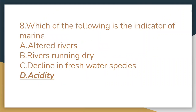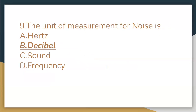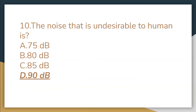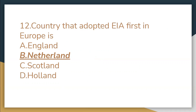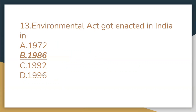Which of the following is the indicator of marine acidity? The unit of measurement for noise is decibel. The noise that is undesirable to humans is 90 decibels. EAA must be an integral part of pre-feasibility. The country that adopted EAA first in Europe is Netherlands.